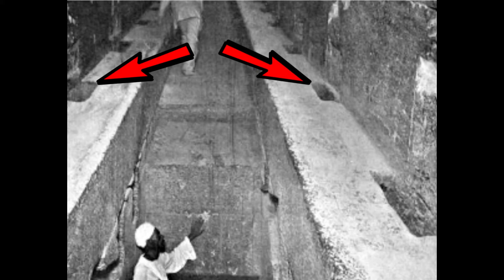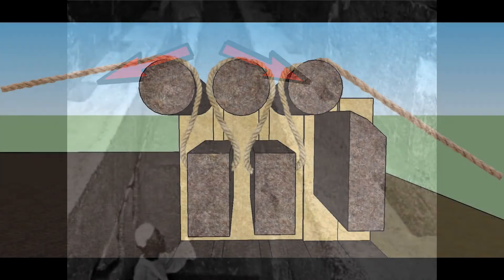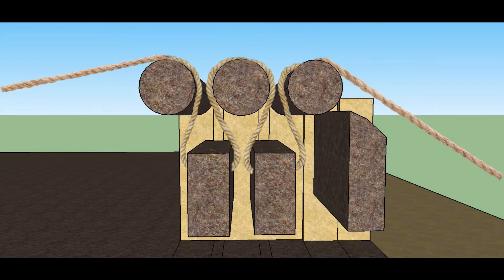So by only adding two stones and sheaving the ropes like this, then it becomes a counterweight. Next, add chalk blocks to the notches in the Grand Gallery.